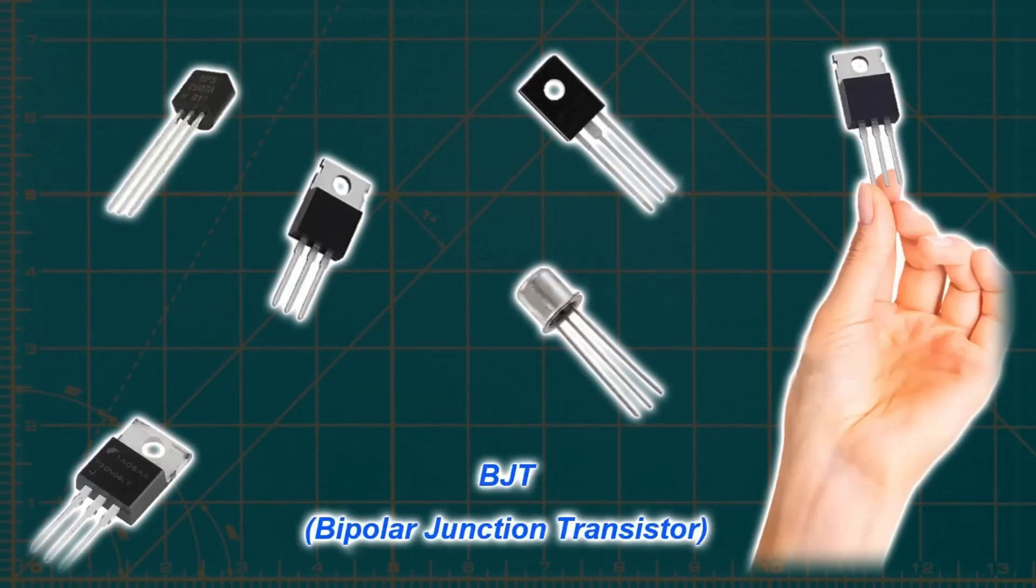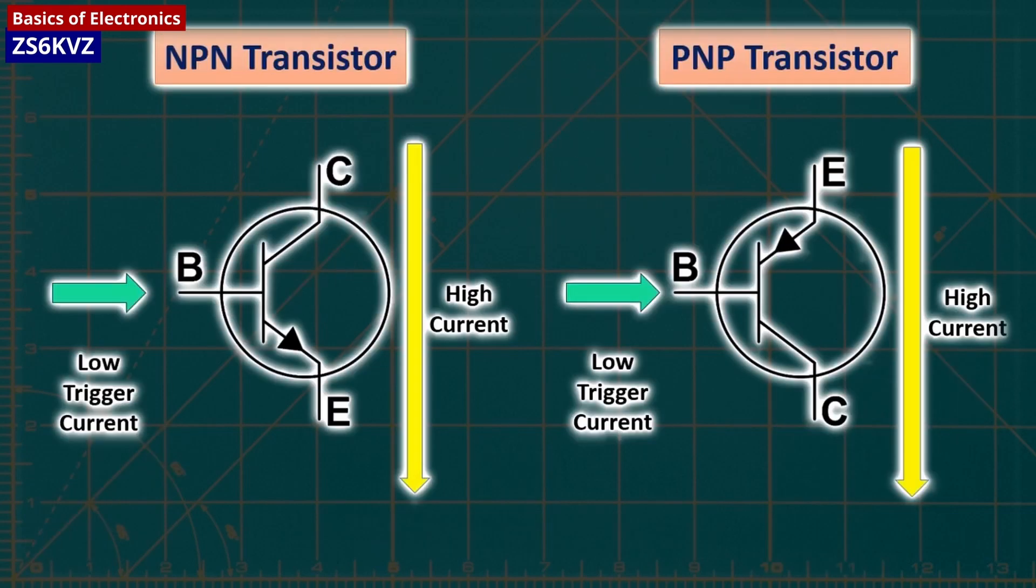Transistors are components that amplify a small electrical current at their base pin, allowing a much larger current to pass between their collector and emitter pins. The amount of current passing between these pins is proportional to the voltage being applied at the base pin.